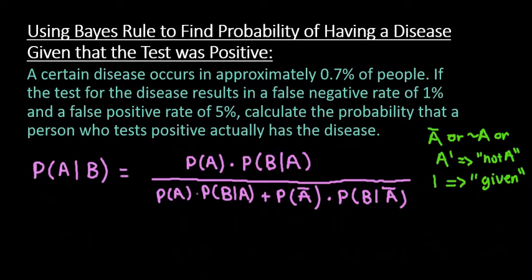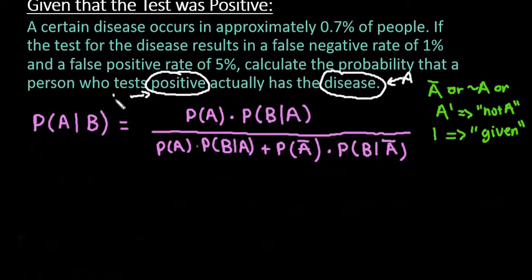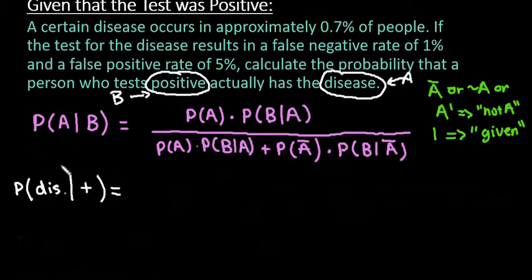That just means the other one has already occurred. So let's put this in context of the problem. We're trying to find the probability of the disease — I'll let disease be A — given that the person tested positive, which will be our B. So we're looking for the probability of the disease, given that the test came back positive. Wherever I have an A I'll replace it with 'disease,' and wherever I have a B I'll replace it with 'positive.'